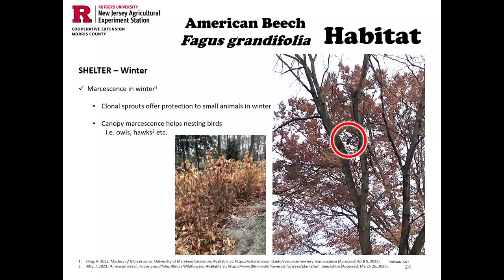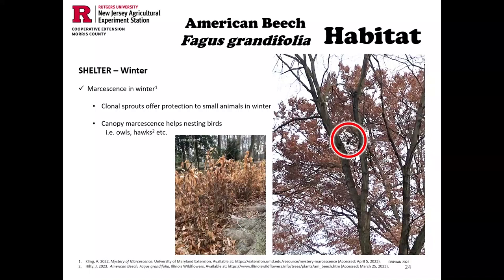An interesting aspect about beech and oaks is they exhibit marcescence — when fall leaves that are already brown and no longer photosynthesizing stay on the trees through winter. You see this normally in the lower canopies, in clonal groves, or in the lower branches of smaller trees. You can even find it occasionally in a large tree. Here, I circled a great horned owl I found multiple days in February in the same spot — he's getting extra protection from winter winds by the marcescence in this tree. The lower canopy marcescence offers shelter from predators as well as weather in our colder months.